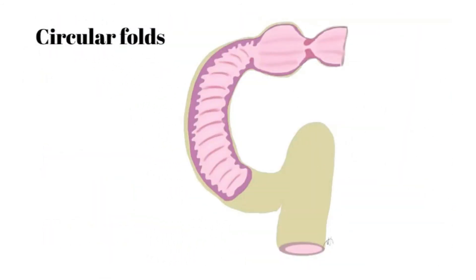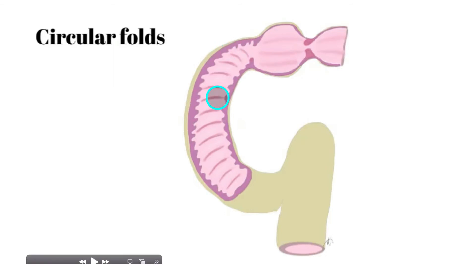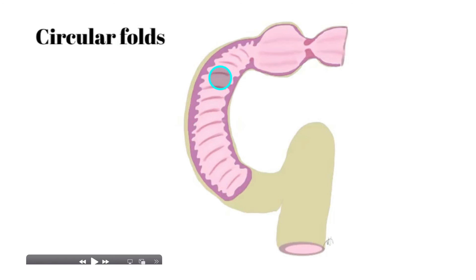Looking at a portion of the duodenum — identifiable by the pyloric sphincter at the distal aspect of the stomach — we can see the interior via a frontal section. The circular folds move around the circumference of the duodenum, increasing surface area. The circular folds also cause the chyme to proceed through in a spiral-like fashion, which slows down movement of the chyme and allows for greater absorption of nutrients, vitamins, minerals, and water into the bloodstream.